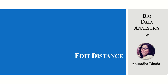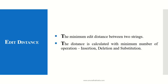Let's see edit distance for big data analytics. Edit distance is the minimum distance between two strings. It is used when we need to calculate the distance between two strings or when we are converting one string into another string. This distance is calculated with a minimum number of operations: insertion, deletion, and substitution.